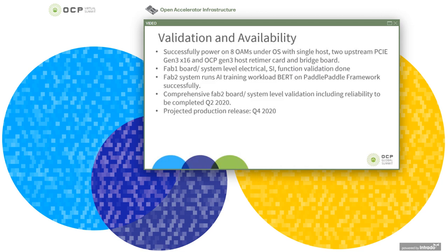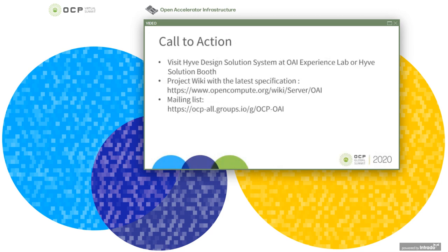The system will be available for samples to test in Q3, and the productization goal is Q4 2020 with system hardware ready — this also requires alignment with OAM partners. You can virtually visit the Hive OAI system from the Hive virtual booth or through the Virtual OAI Experience Lab. The latest spec is also available in the OAI Wiki, and you are welcome to email with any questions.